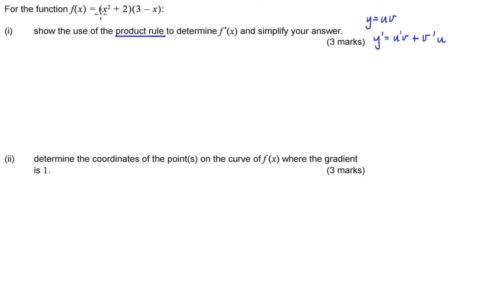Okay so we've got our uv style set up here where we could call this u and this v. So our derivative of this function or f dash x is going to be equal to the derivative of the front which is just 2x times the back 3 minus x, plus the derivative of the back which is just going to be negative 1 times the front left the same.